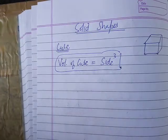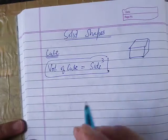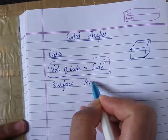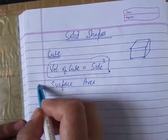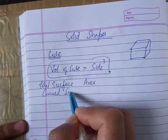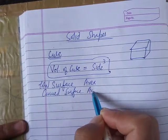Let us know the surface area. The whole surface is called surface area. There are differences in the surface area. There is the curved surface area and total surface area.